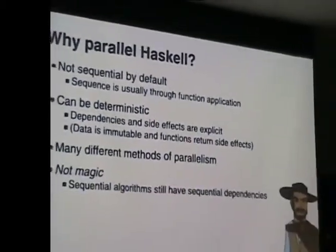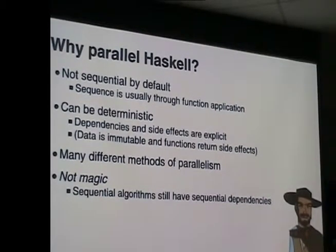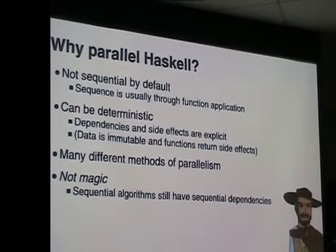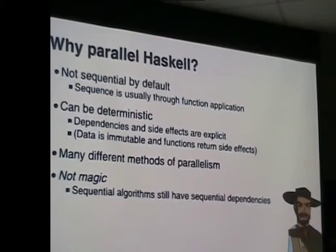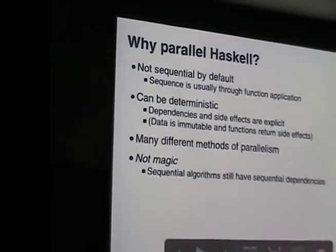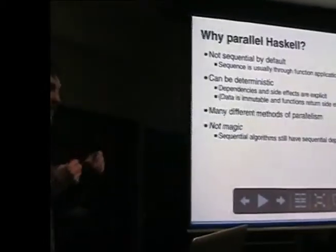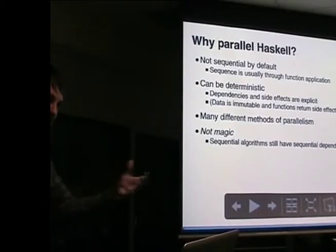So why would we use Haskell to write a parallel program? What makes it better? First of all, it's not really sequential. In C, Ruby, or JavaScript you've got statements - you do this statement, then the second statement. In Haskell you don't have that. It's just everything - you apply functions, and that's how you map out your computation.